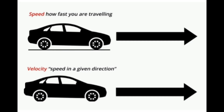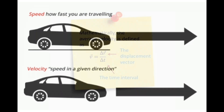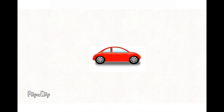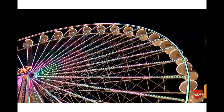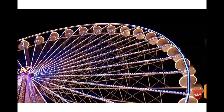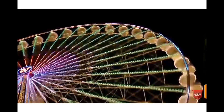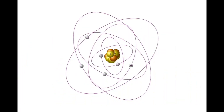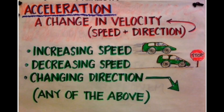Velocity is the vector quantity that refers to the rate of change of its position; along with magnitude, it should also have direction. The velocity with which an object travels along a straight path is called linear velocity. When the path is circular or curved, the velocity with which the object moves is called angular velocity.